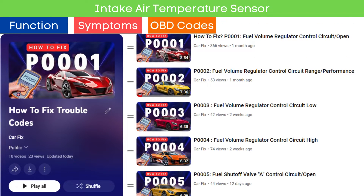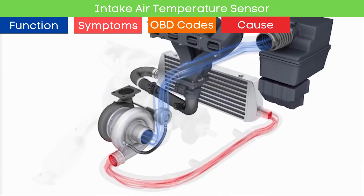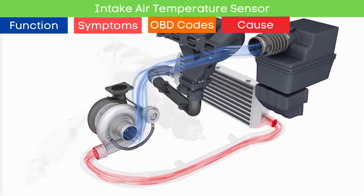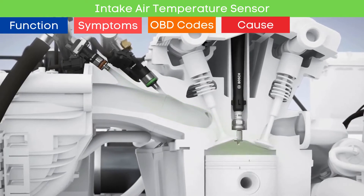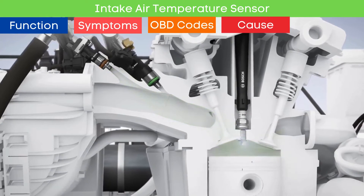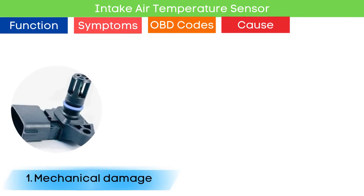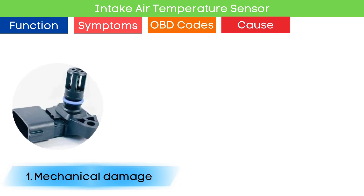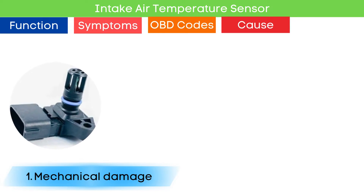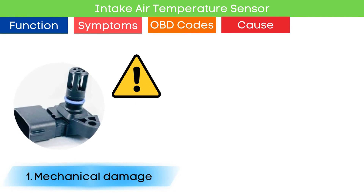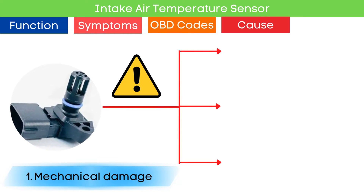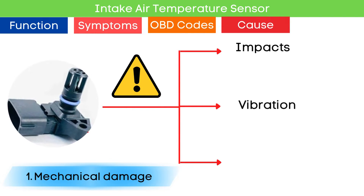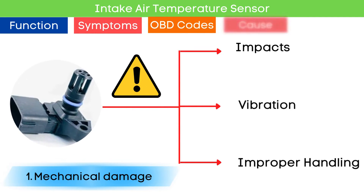You can find our playlist on the meaning and how to diagnose trouble codes step by step — link in the corner. Now that we understand the symptoms of a faulty IAT sensor, let's delve into the causes. First: mechanical damage. Physical damage to the sensor or its components can impair its ability to function correctly. This can result from impacts, vibrations, or improper handling during maintenance.